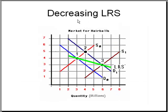Finally, it is possible to have a decreasing long-run supply curve where there is an increase in demand, but because of innovations and technology, the supply curve shifts farther to the right. The increase in demand is more than offset by an increase in supply, so your long-run supply curve would be downward sloping to the right.